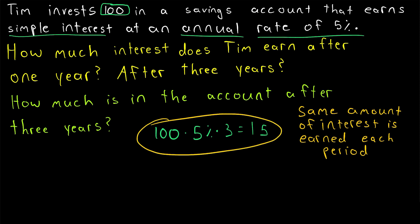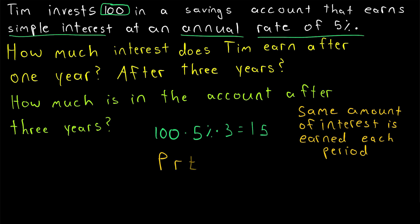This quick problem gives way to a general formula. If some principal amount P is invested, earning a simple interest rate of R, then the interest earned on the investment of P at a simple interest rate of R at time T is just P times R times T.